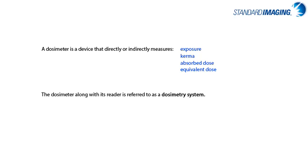A dosimeter can be described as any device capable of measuring quantities related to ionizing radiation, in particular exposure, KERMA, absorbed dose, or equivalent dose. A dosimeter, along with its reader such as an electrometer, is referred to as a dosimetry system. A useful dosimeter, with respect to medical physics applications, exhibits the following properties.